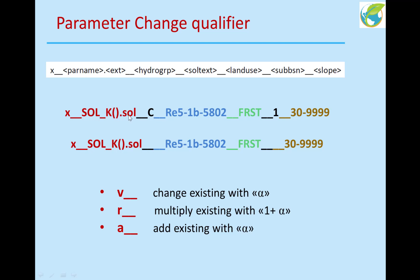So soil hydraulic conductivity in extension in soil file, based on hydrologic group, soil texture, land use, sub-basin number, and slope. So this really goes even deeper than an HRU. You can really specify the value of a parameter based on many of its characteristics.